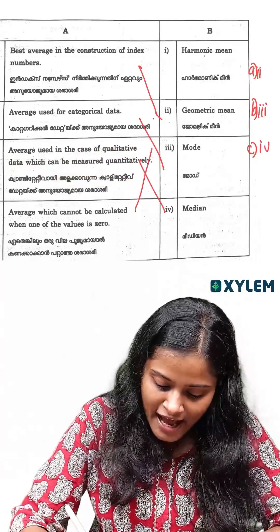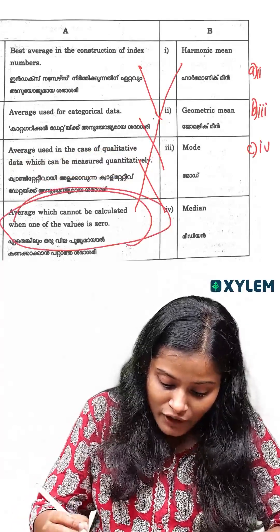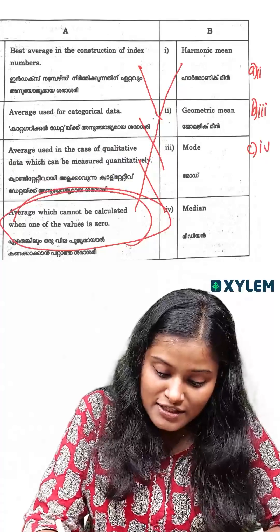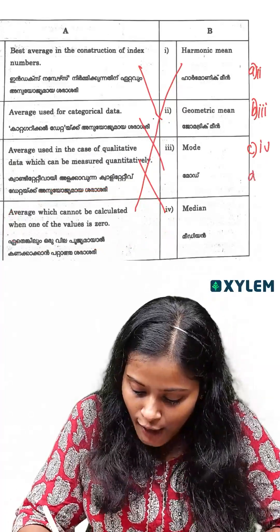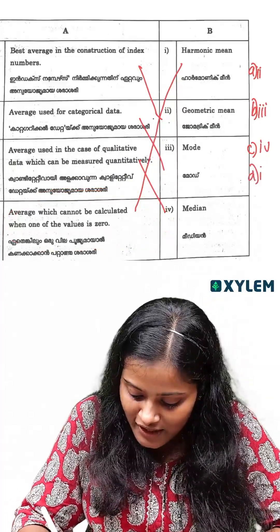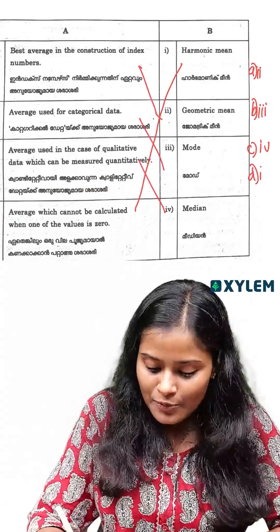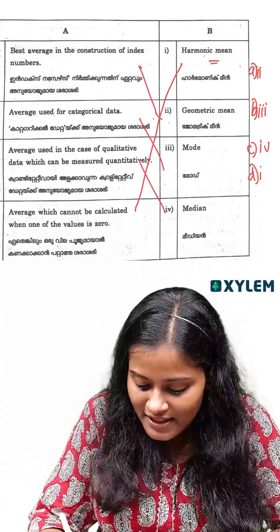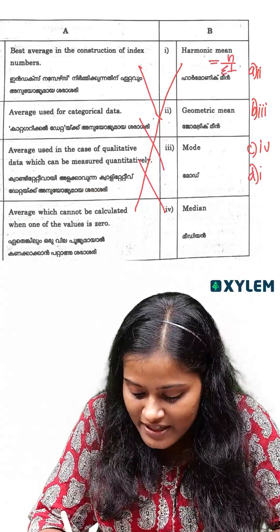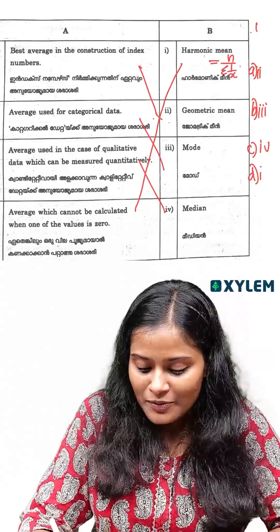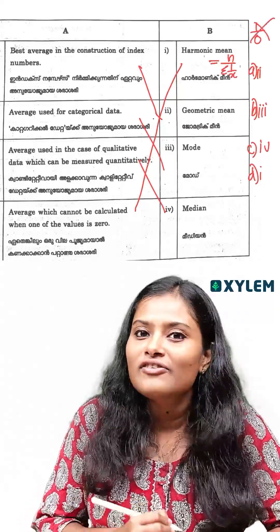The average which cannot be calculated when one of the values is zero — that is harmonic mean. The harmonic mean equation is n divided by the summation of 1 over x. So if one value is zero, we get 1 over 0, which is not defined. Therefore harmonic mean cannot be calculated when one of the values is zero.